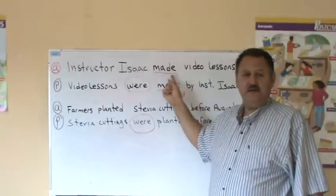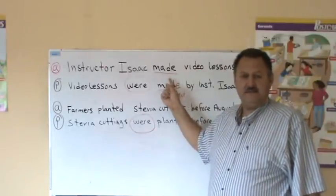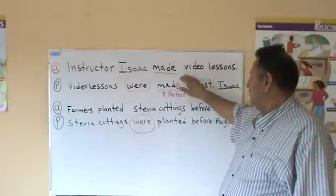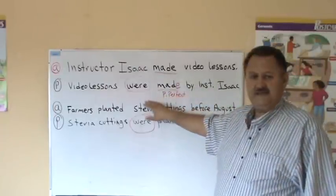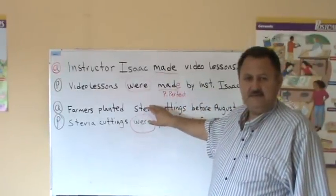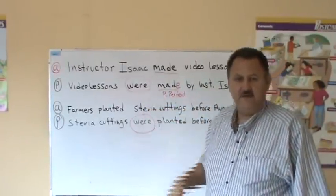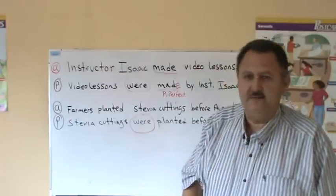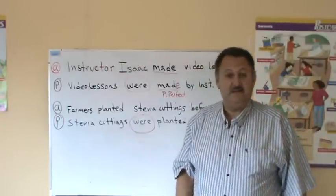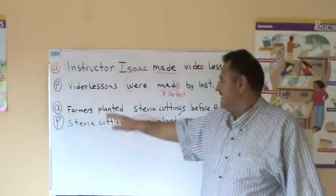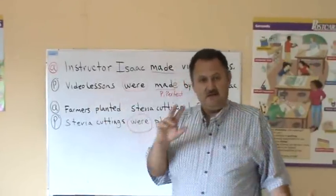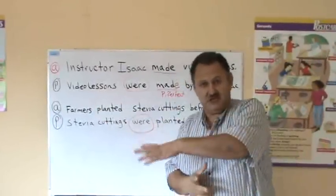We have a verb in the past tense. Now look at this next sentence. This next sentence — the focus is not on me. Nope, it's not on me. It says: video lessons. See how the focus was changed?